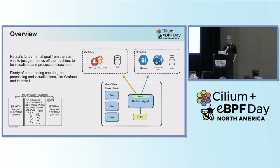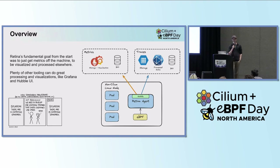The overview of Retina — Retina's fundamental goal from the start was to visualize or get metrics off the machine. We didn't want to reinvent the wheel — like the XKCD comic about 14 competing standards, then 15. We wanted to avoid that situation. Hubble already does a great job; people consume Hubble metrics and use the Hubble tooling, Hubble Observe. We just wanted to provide a way to get data plane metrics off the VM.